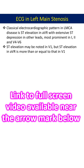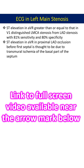The classical electrocardiographic pattern in left main coronary artery disease is ST elevation in AVR with extensive ST depression in other leads, most prominent in leads 1, 2, and V4 to V6. ST elevation may be noted in V1, but ST elevation in AVR greater than or equal to that in V1 distinguishes left main stenosis from left anterior descending coronary artery stenosis with 81% sensitivity and 80% specificity.